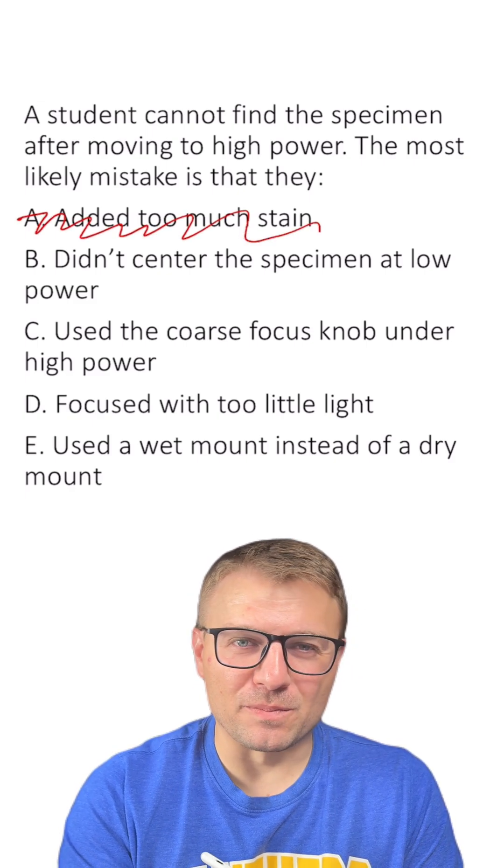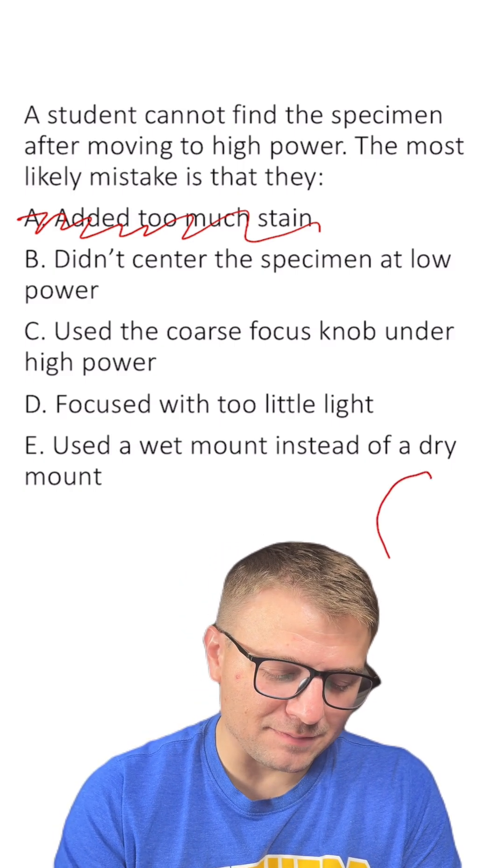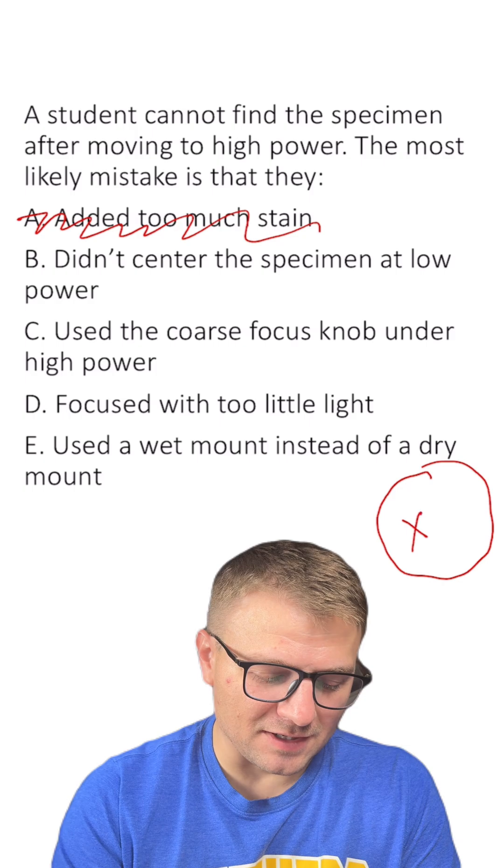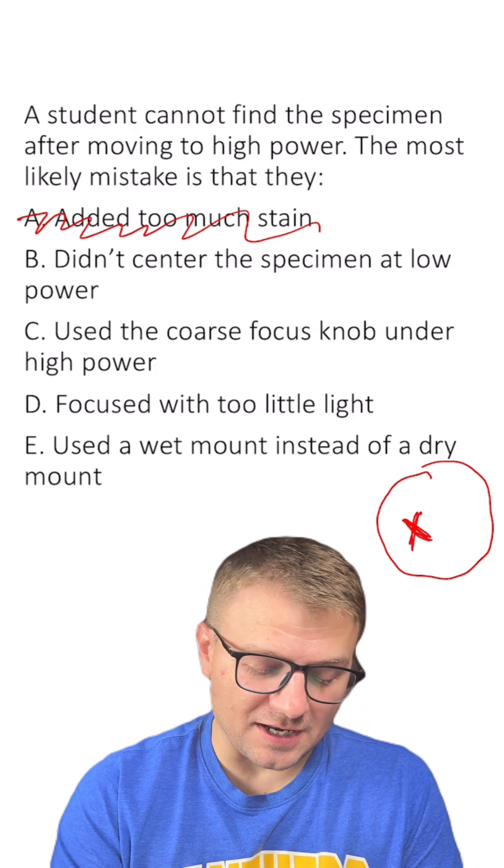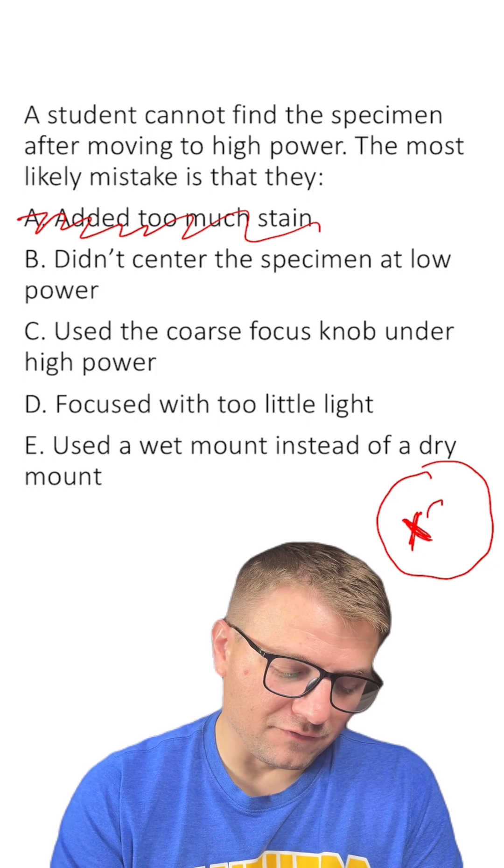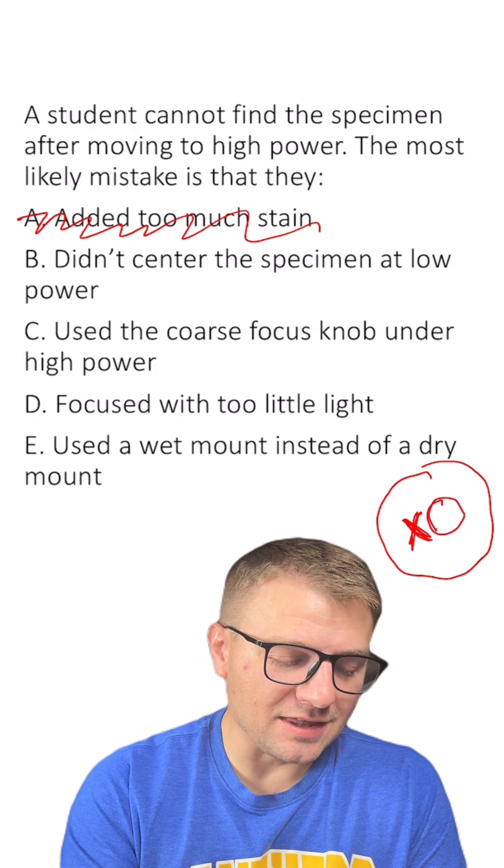B, didn't center the specimen at low power. Typically, this is what students did. They would find a specimen, and let's say their specimen is like X here. It wouldn't be in the center, so when they moved up to the next objective lens, their field of view was smaller, and it wouldn't be in the actual field of view. I think B is the answer,